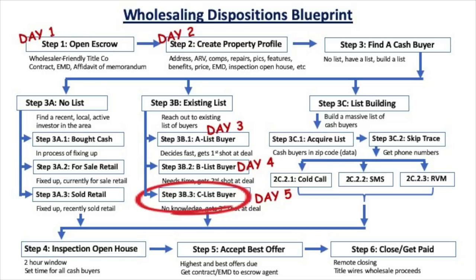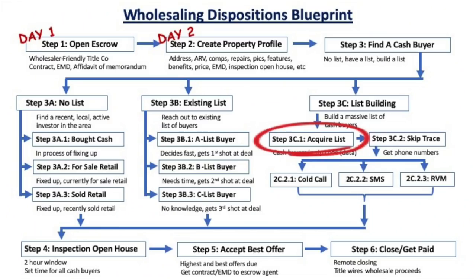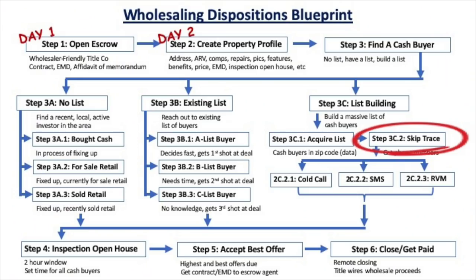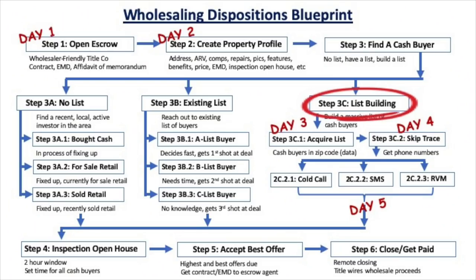Then on day five, blast the deal out to your C-list — everyone else not on your A or B-list. These are people you have no knowledge of in terms of who they are or what their buy criteria is; they just somehow made it onto your list. The third way to find a cash buyer is more of an ongoing strategy to build a massive cash buyer list: acquire a list of cash transactions in your market from a list provider, skip trace the list to get phone numbers, then cold call, text, or send a ringless voicemail in bulk. For example, you could purchase a list of a thousand cash buyers, skip trace the entire list, and send a text blast or RVM blast to all thousand. If you hustled, you could do that on days three through five and find a buyer. This is one way the pros continually build bigger and bigger cash buyer lists.